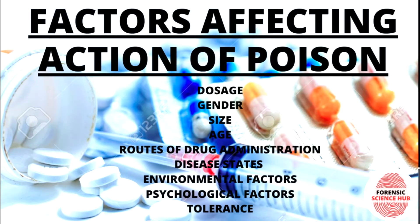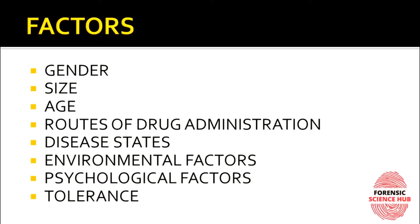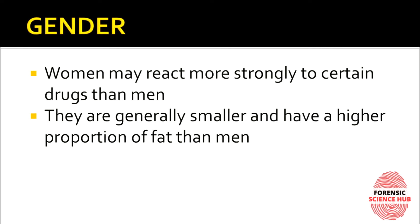Hello everyone, welcome back to my channel. In today's video I'm going to discuss the various factors that affect the action of poison. These factors include gender, size, age, routes of administration, disease, environmental factors, psychological factors, tolerance, etc. Let's discuss them one by one.